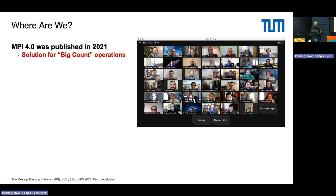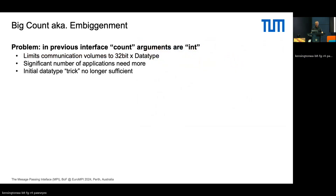Before MPI 4, any count arguments — when you say I want to send X number of datatypes or receive X number of datatypes — was an integer variable, limited to 32 bits. With that, you can only send a certain amount of data in one message. When MPI started, that limit seemed far away because you would never send that much data in one single message. Of course, as we all know, this has changed with big data operations these days.